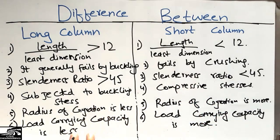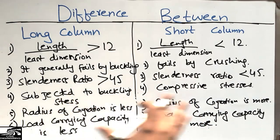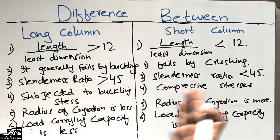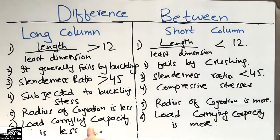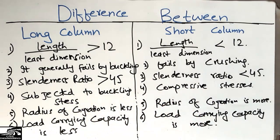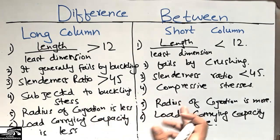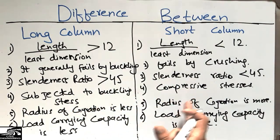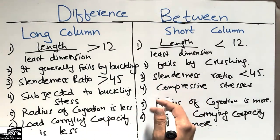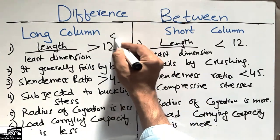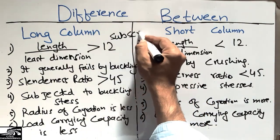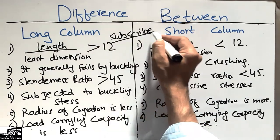So these were the six differences between these two columns, by which we can differentiate between them. I hope this helps you understand the differences between the long column and short column. Don't forget to subscribe to our channel for more civil engineering updates. Thank you for watching.